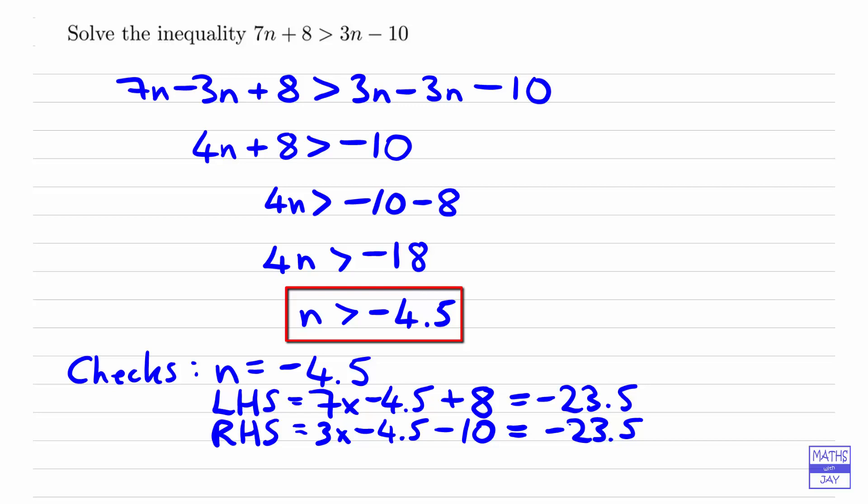The next thing that we want to check is that we've got the symbol correct. We want to make sure it should be greater than rather than less than. So we can choose any value greater than negative 4.5. And the really simple one to check would be 0. And when n is 0,